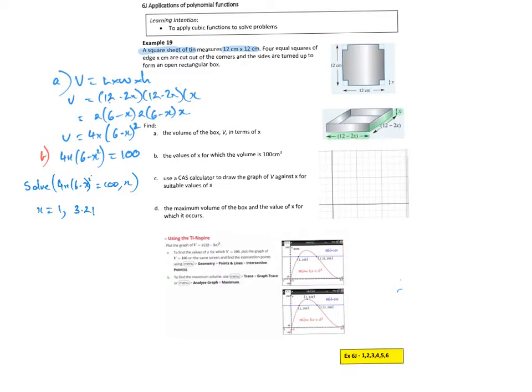Use a CAS to draw the graph of V against X for all suitable values of X. So obviously you can see the calculator CAS result there. We could probably have done a fair job of it without the CAS. If we consider, I might come across, Y intercept would occur when X is equal to 0. And clearly if I put X equal to 0, the volume is also equal to 0.